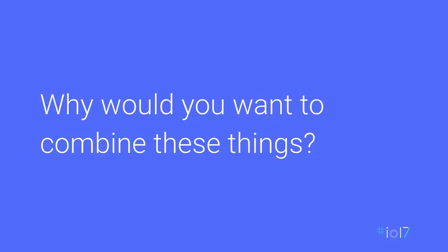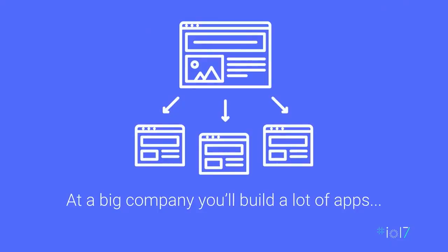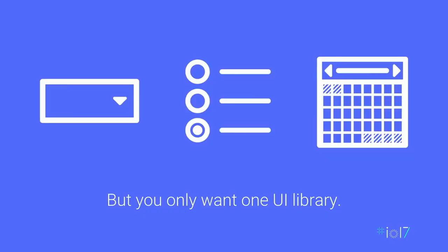Let's talk about why we would want to combine these things. We talk to a lot of companies and enterprises using many different technologies, and these companies are often building lots of apps across different sub-teams and divisions. A very common problem is that a lot of these companies end up wanting a single UI library — whether building a date picker, calendar, or data table — taking UI standards and brand guidelines and applying them regardless of what framework they're using.